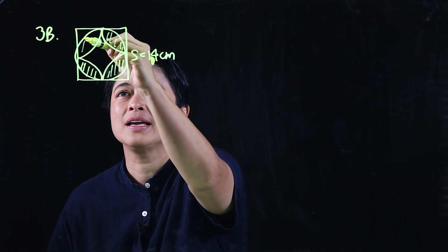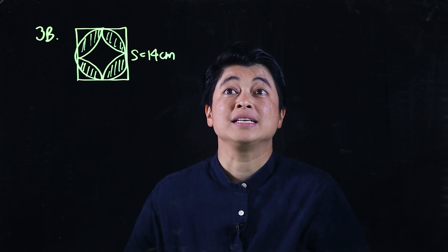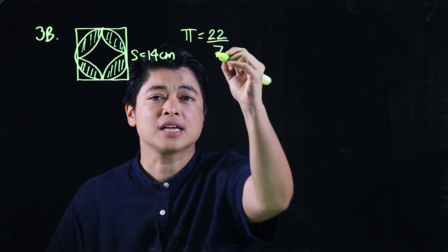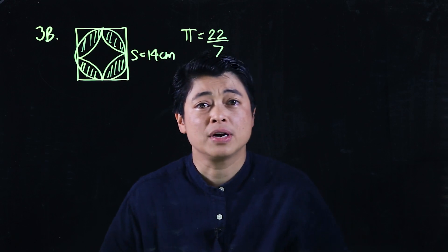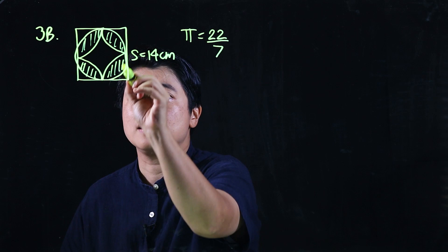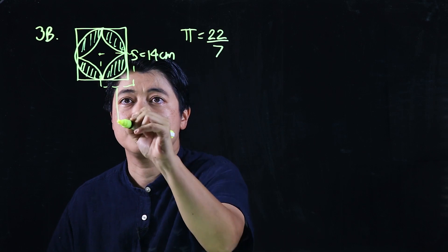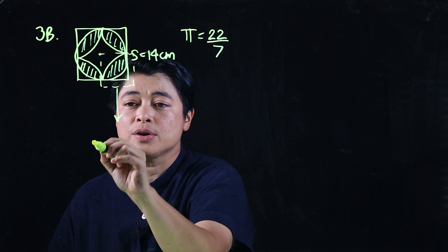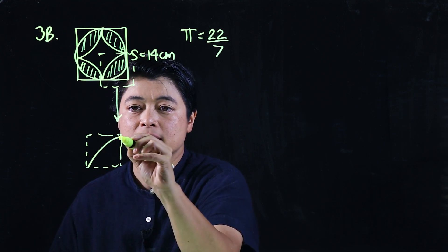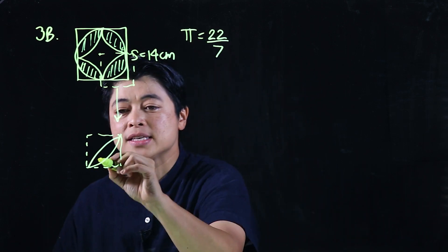This is quite a challenging problem so we need to do it step by step. Since they say use pi equal to 22 over 7, they don't want us to use calculators. I'm going to take this picture and redraw it — a square like that, with the curved parts arranged inside.